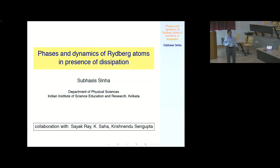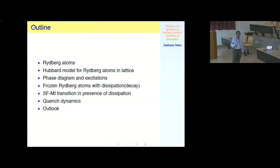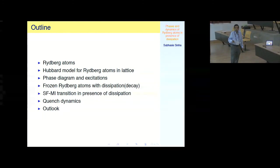Sayok is present in this workshop — he was also at the school. He's a graduate student of ISAR, and Kush is now a post-doc. The outline of this talk is: first, I'll briefly discuss Rydberg atoms and why they're a candidate for realizing correlated phases of synthetic ultra-cold material. Then I'll go to the modeling via the Hubbard model of Rydberg atoms in optical lattice, then the phase diagram and excitations, and finally the superfluid-Mott insulator transition and dynamics in the presence of dissipation.